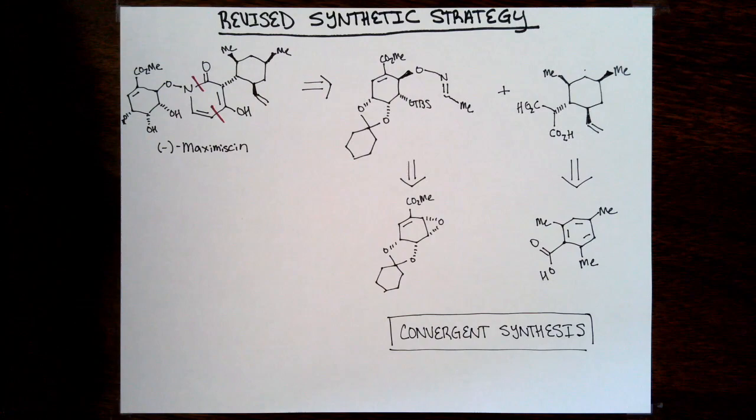In taxol, the Barron group really does prove that leaving the oxidative sequence to the end is highly beneficial. They're able to get the shortest step count and overall highest yield in terms of longest linear steps, but the greatest amount of taxol ever generated. Here, clearly with such an expedient synthesis of this molecule, that pyridone disconnection was really key to rapidly generating the natural product.